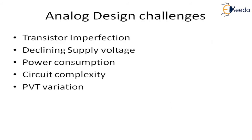Now, what are the analog design challenges we face in today's technology? First is transistor imperfection. As scaling continues day by day, many parameters are declining — for example, voltage gain. The voltage gain of MOS transistors is declining with scaling. Next is declining supply voltage. As supply voltage declines with scaling, in 1970 it was 12 volts, and now it is 0.9 volts. Many circuits are being discarded due to this declining supply voltage.